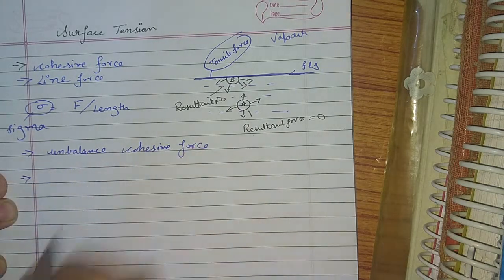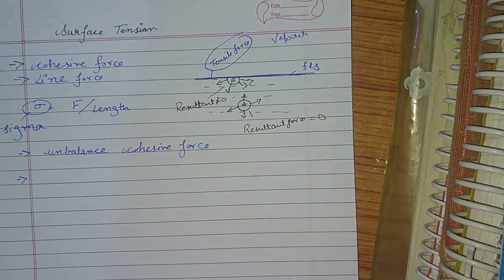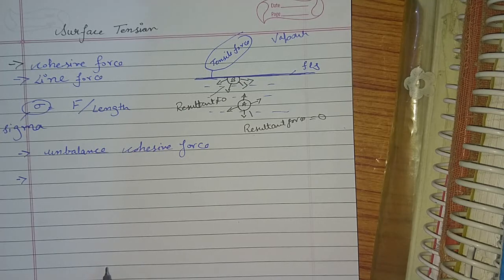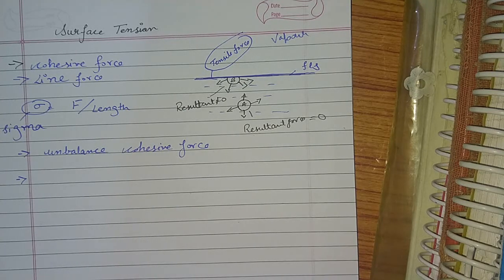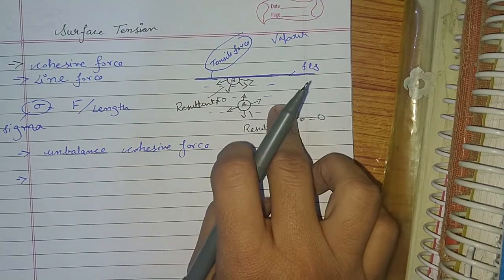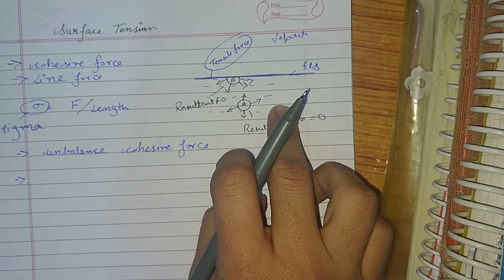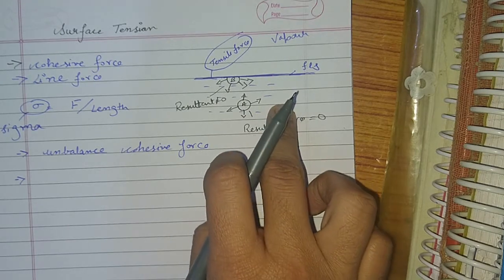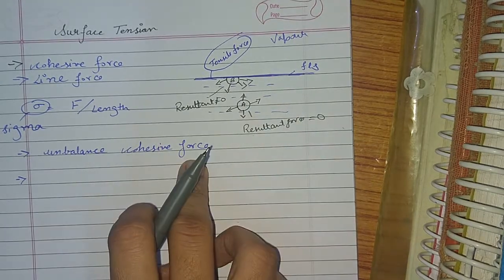What is a cohesive force? Cohesive force is a force of attraction between the same molecules, and adhesive force is a force of attraction between different molecules. So here we have the same molecules, so surface tension is due to cohesive force.